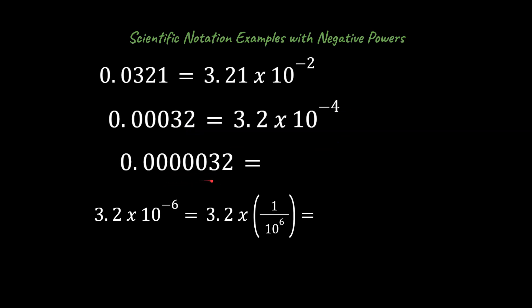How about this one over here? What do you expect this would be? Well, the base is going to be the same. It's going to be 3.2, and we just count over how many we have. So 1, 2, 3, 4, 5, 6. So that should be 3.2 times 10 to the negative 6th power.